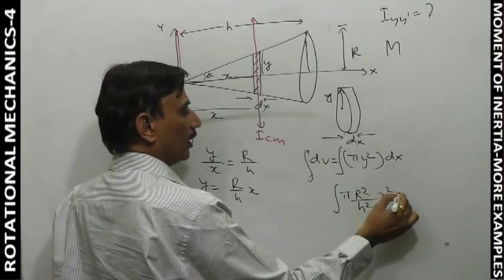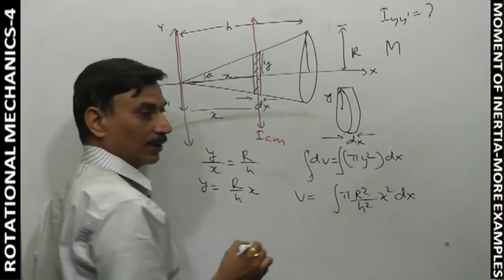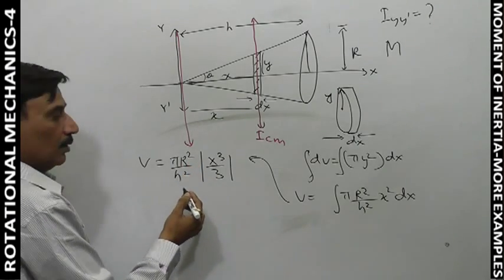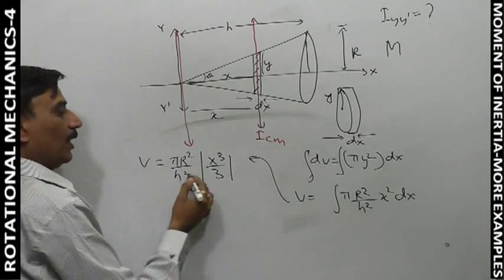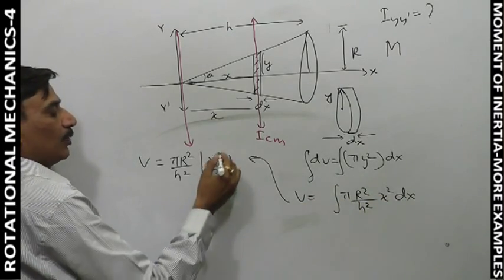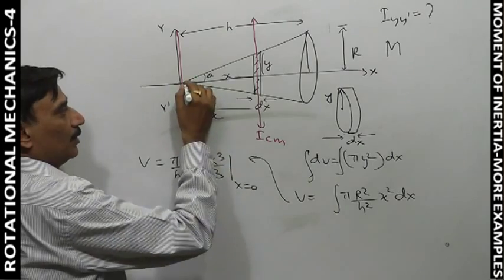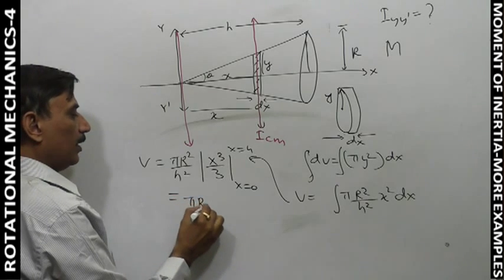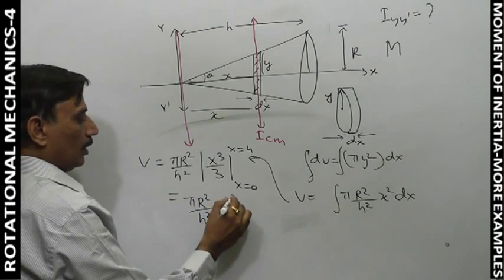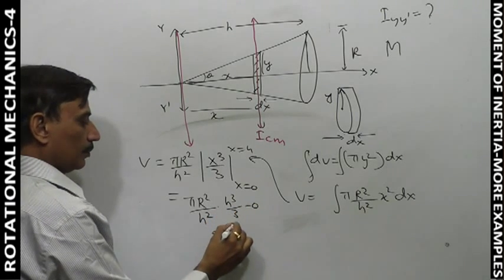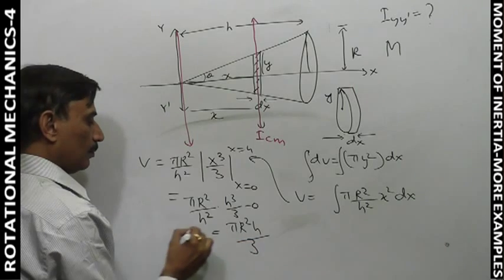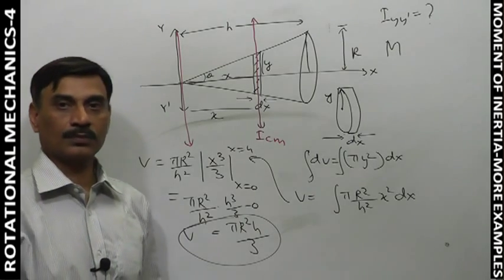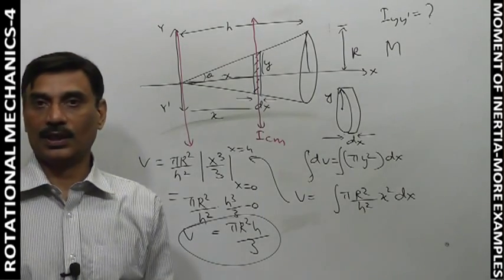So y² = r²/h² · x². The volume element is π·(r²/h²)·x²·dx. Integrating from 0 to h: π·r²/h² · [x³/3] from 0 to h gives π·r²·h/3. This is the volume of the right circular cone with height h and radius r.